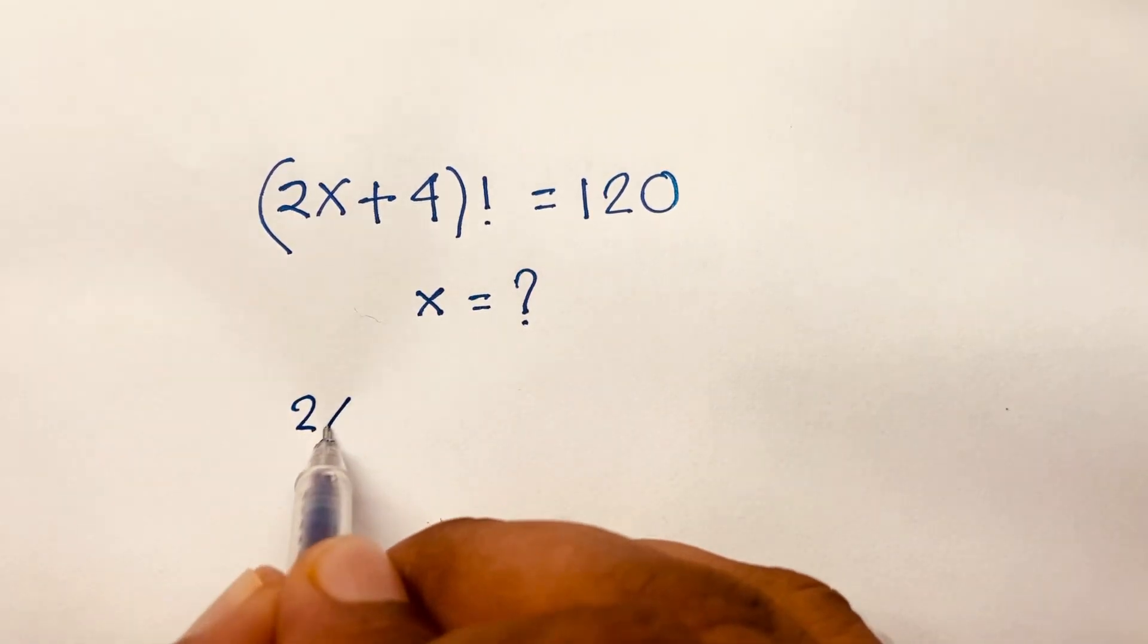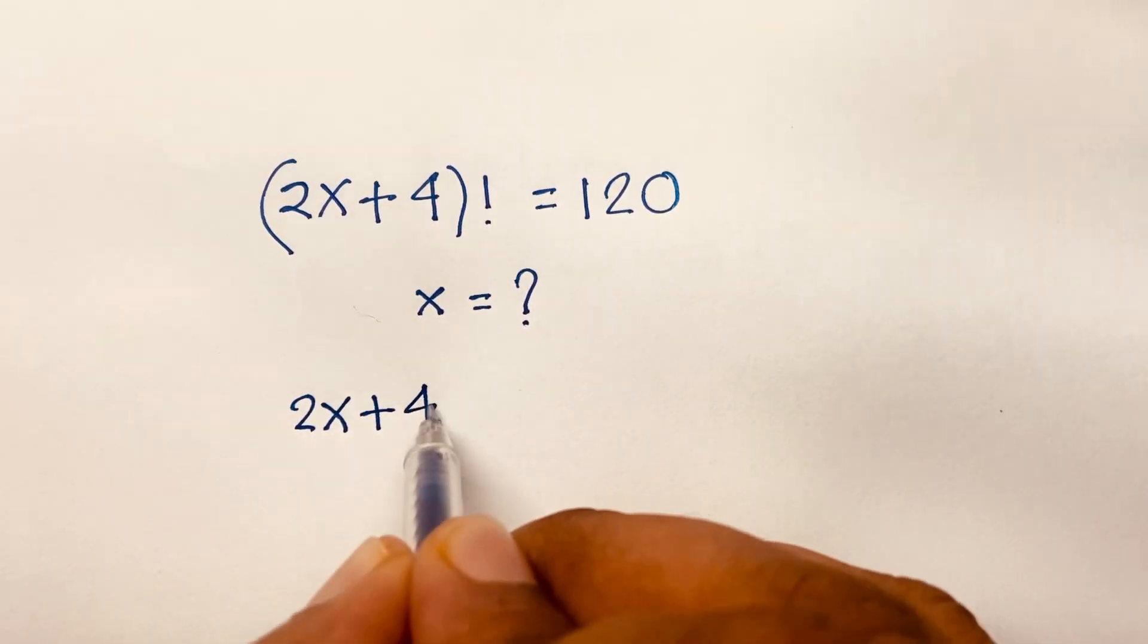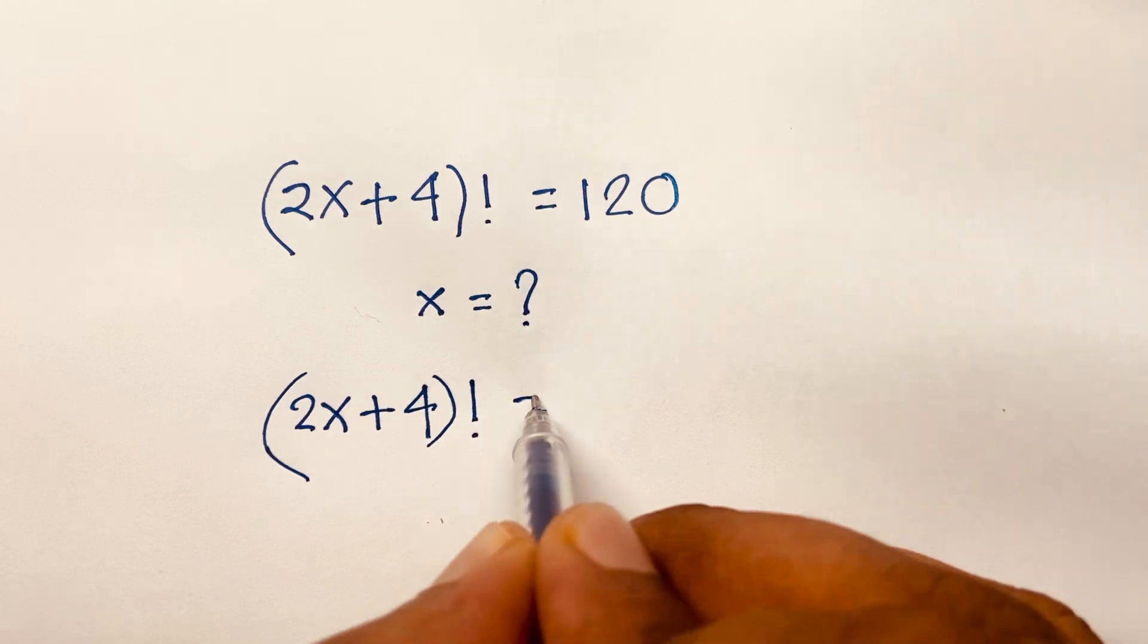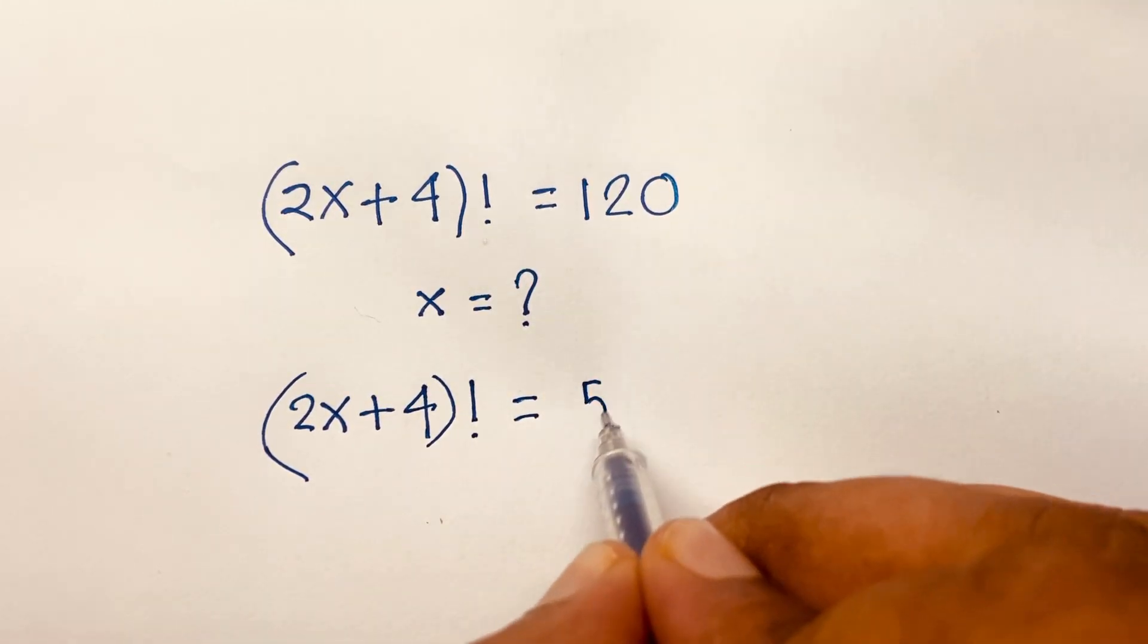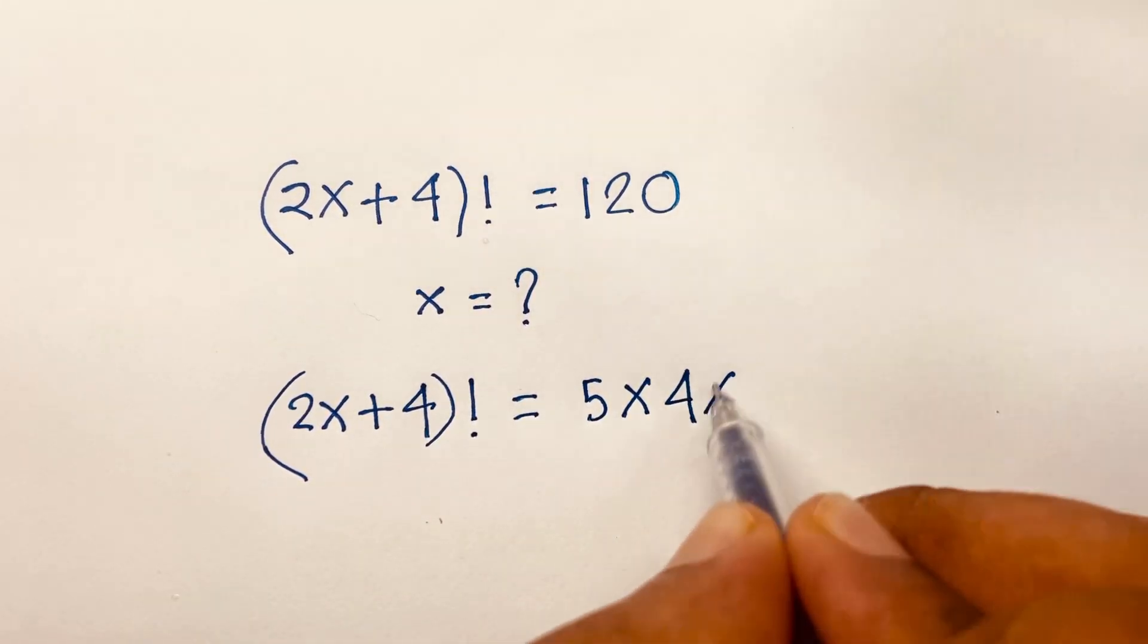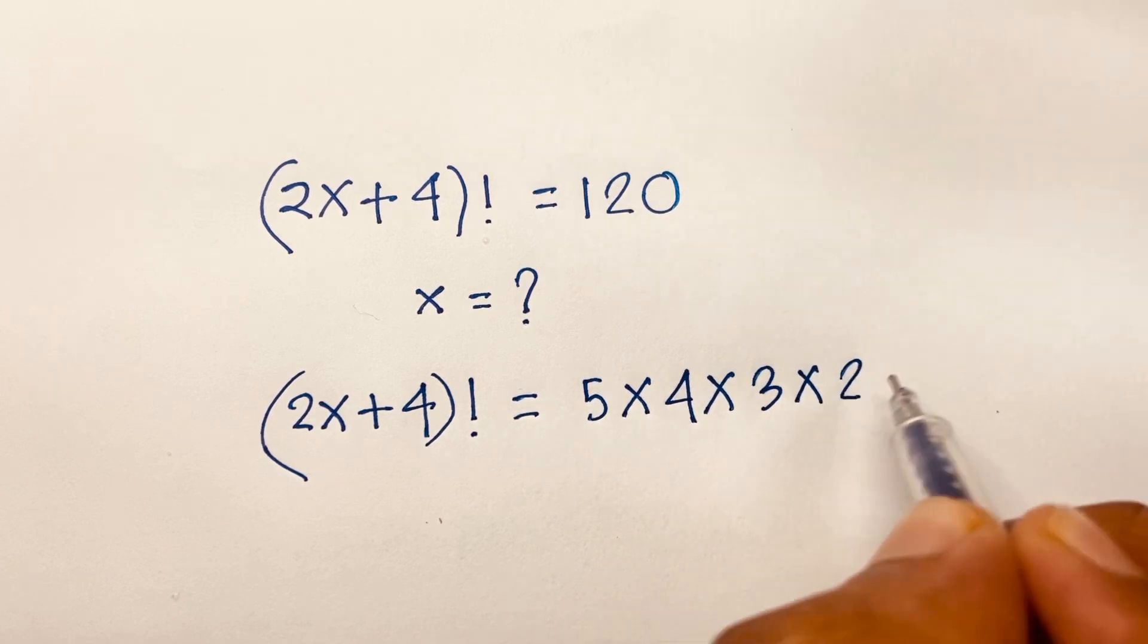First, I can see (2x+4)! equals 120. This will be 5 times 4 times 3 times 2 times 1.